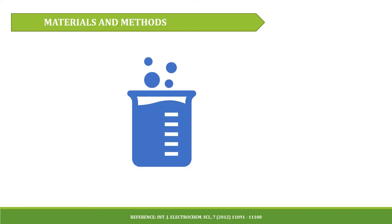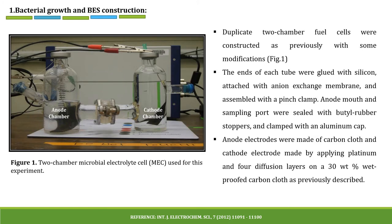Now we will see materials and methods used in this research work. First is bacterial growth and bio-electrochemical system. Duplicate two-chamber fuel cells were constructed as previously described with some modifications, as shown in figure 1. The ends of each tube were glued with silicone, attached with anion-exchange membrane, and assembled with a pinch clamp. The anode mouth and sampling port were sealed with butyl rubber stoppers and clamped with an aluminum cap. Anode electrodes were made of carbon cloth and cathode electrodes were made by applying platinum and 4 diffusion layers on a 30-weight percent wet-proofed carbon cloth.